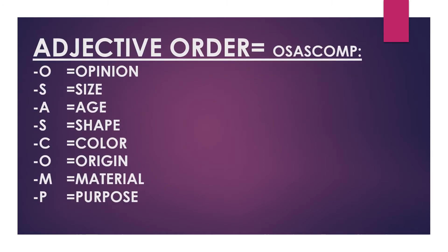The order of adjectives, or adjective order. The short form we call it OSASCOMP. O stands for opinion, S for size, A for age, S for shape, C for color, O for origin, M for material, B for purpose.